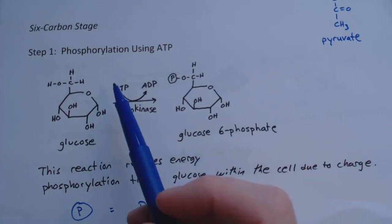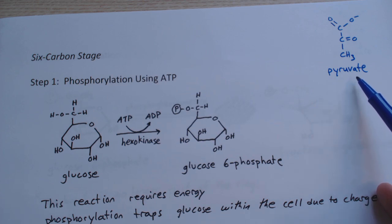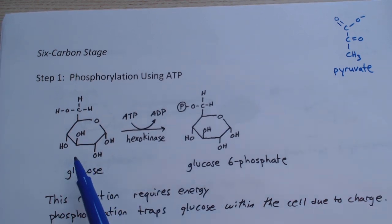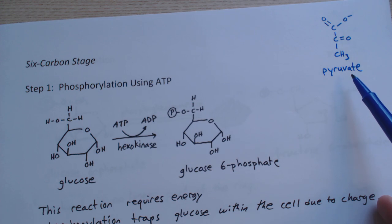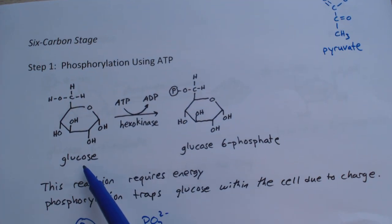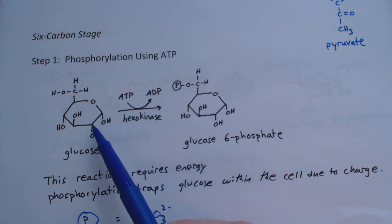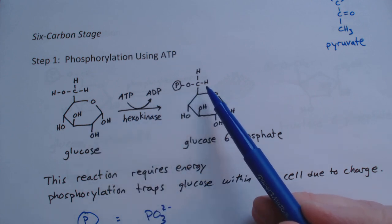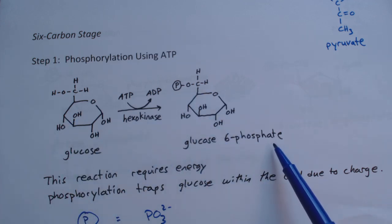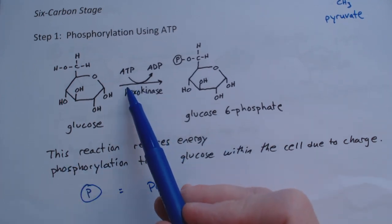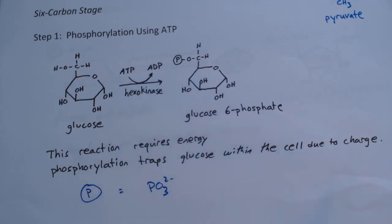Let's start with the six-carbon stage. We have glucose, and through the enzyme hexokinase, we attach a phosphate to carbon six and produce glucose-6-phosphate. This reaction requires energy because we're stripping phosphate and energy out of the ATP to attach it here.